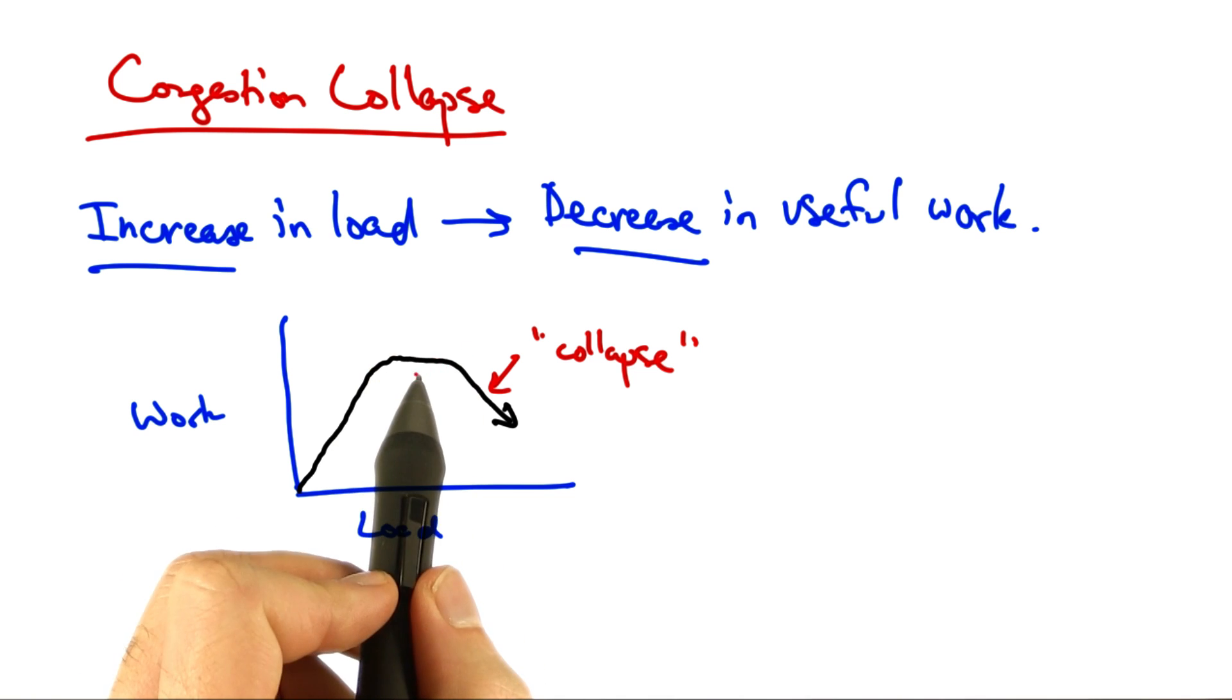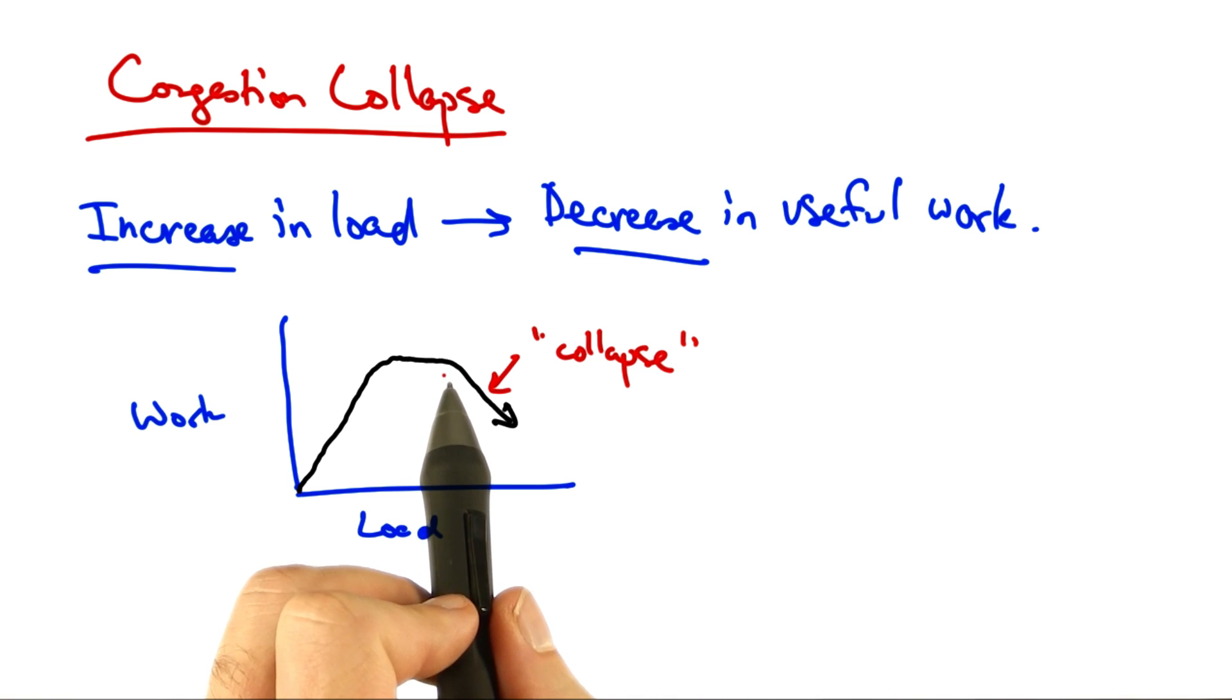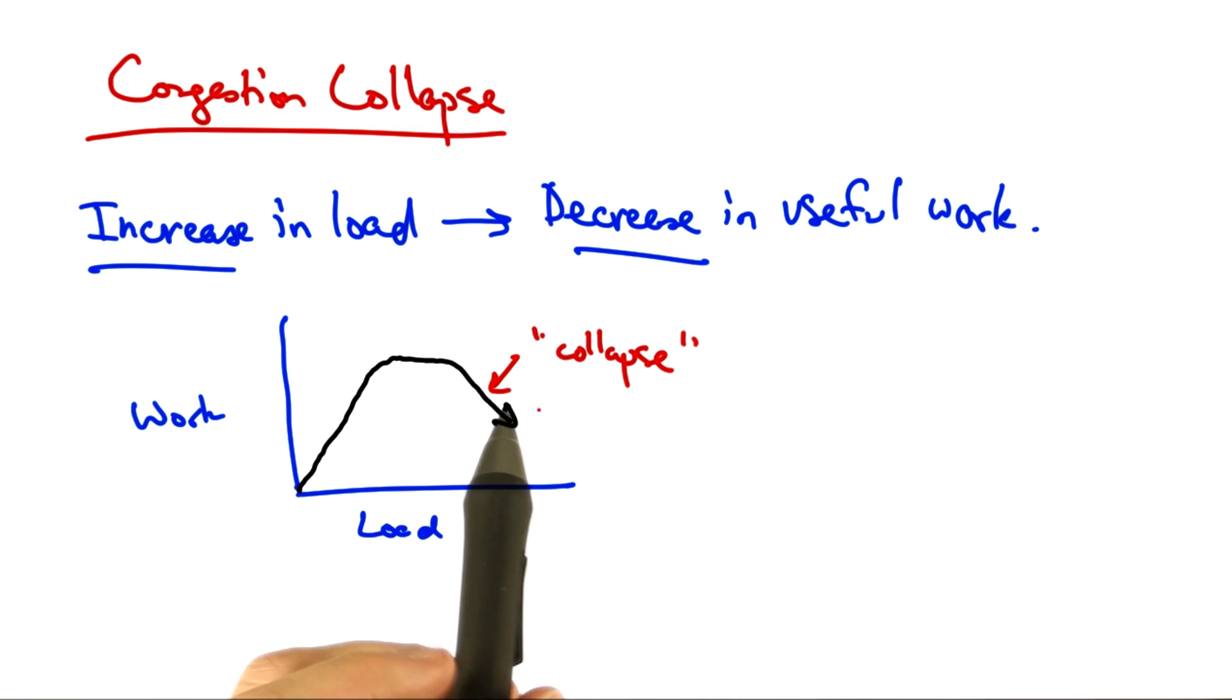At some point, the network reaches saturation, at which point increasing the load no longer results in useful work getting done. But at some point, actually increasing the traffic load can cause the amount of work done or the amount of traffic forwarded to actually decrease.